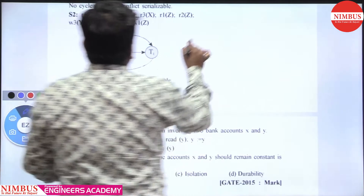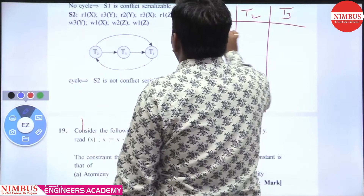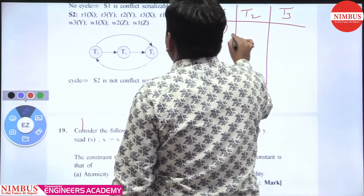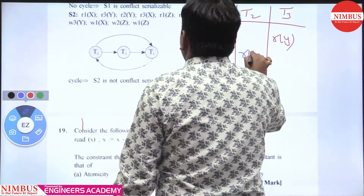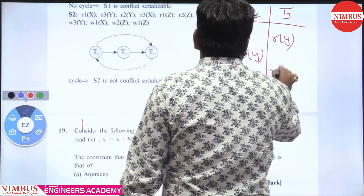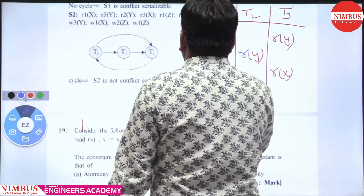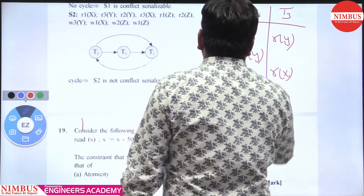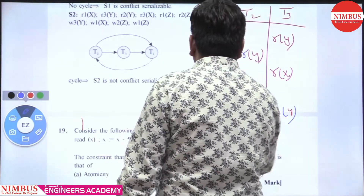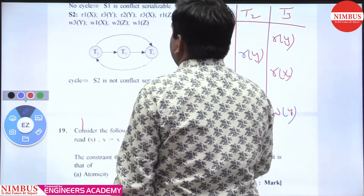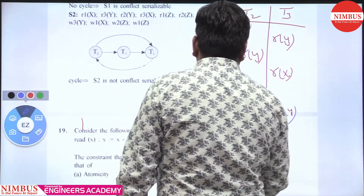What is given in S2? The operations in S2 in time order are: read X, read Y, read Y, read Y, read X, read Z, read Z, write Y, write X, write Z, write Z.